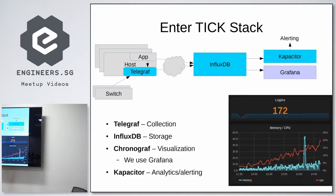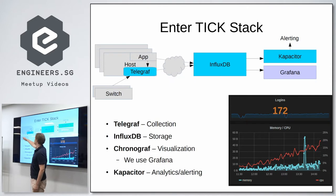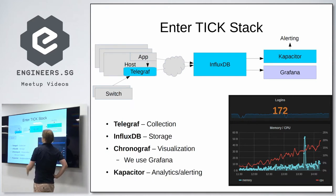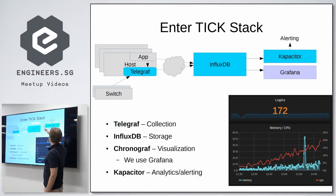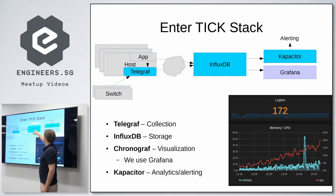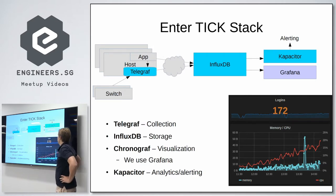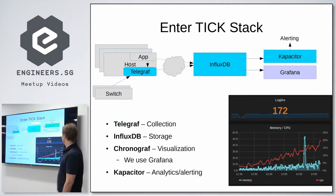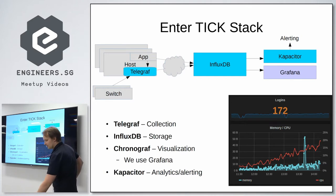Basically, we have a host sitting here with a Telegraph collector. It ships data from the host itself, from applications running on it, and external devices like switches. Some hosts act as an aggregator. It gets pushed over the network to InfluxDB, a time series database. Then we have Capacitor, which does analytics and alerting on the time series data — for example, if we see a disk starting to fill up. For visualization we have Grafana, which most of you have probably seen.